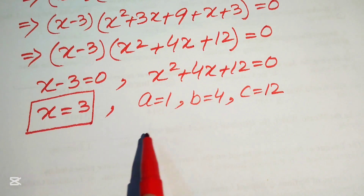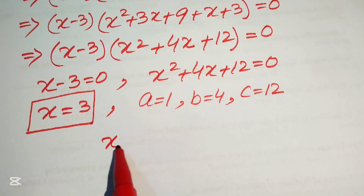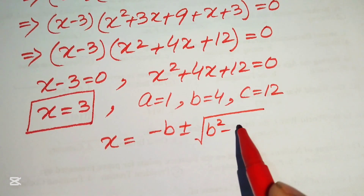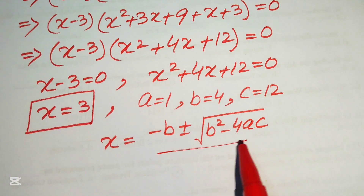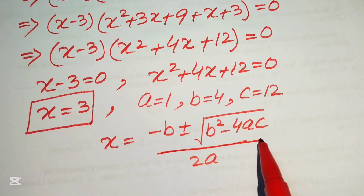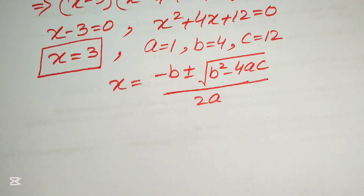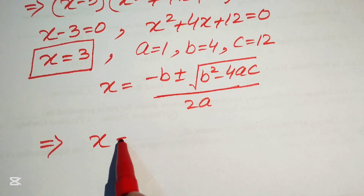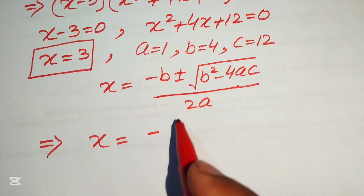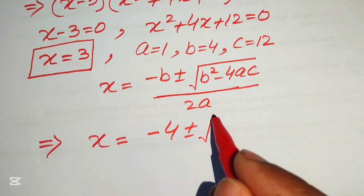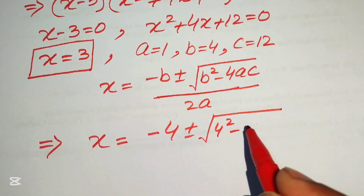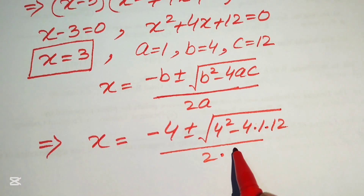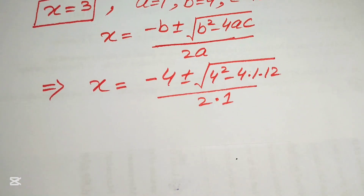Using the quadratic formula, x equals negative b plus or minus square root of b squared minus 4ac, all divided by 2a. Substituting the values: x equals negative 4 plus or minus square root of 4 squared minus 4 times 1 times 12, divided by 2 times 1.